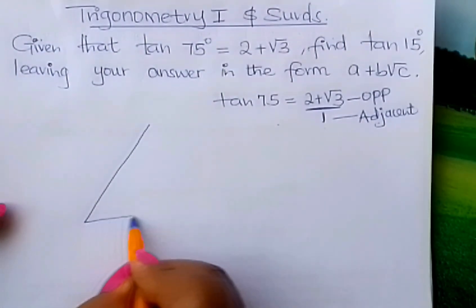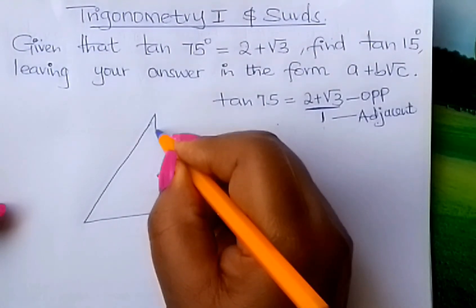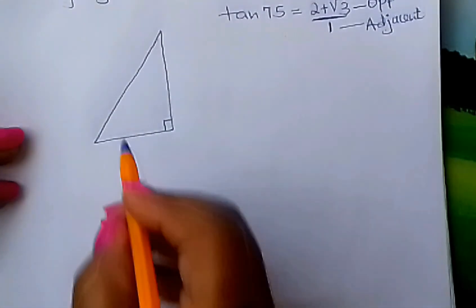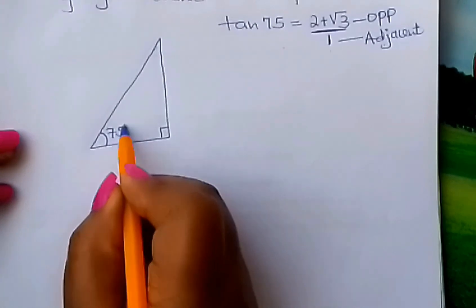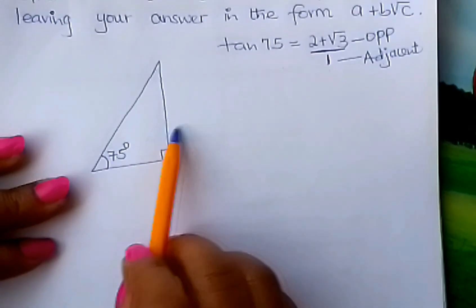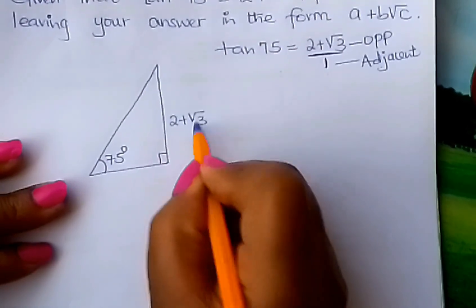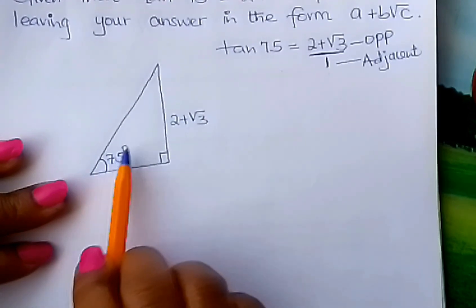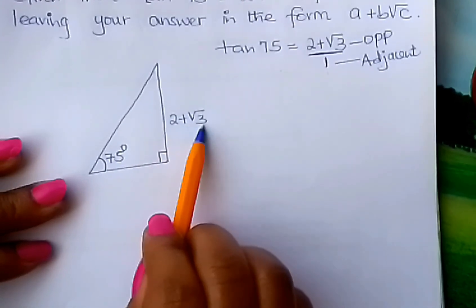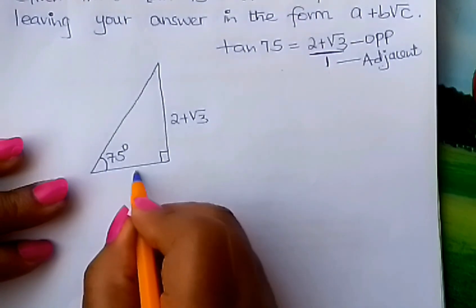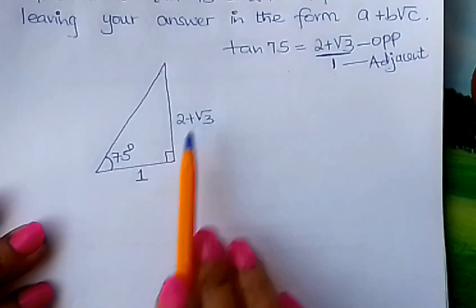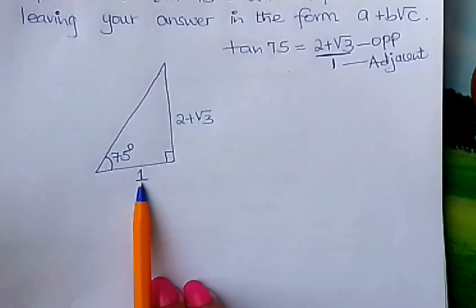So learner, go and draw a right angle triangle. Fix 75 degrees here. And therefore, tan 75° is equal to opposite, which is 2 plus root 3. If 75° is here, this side is called opposite. So our opposite is 2 plus square root of 3 over adjacent, which is 1.